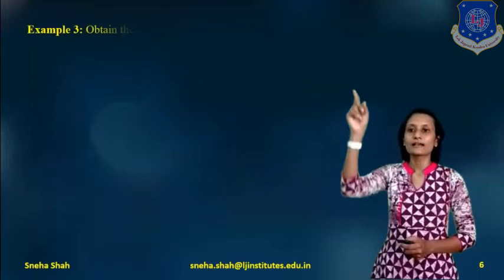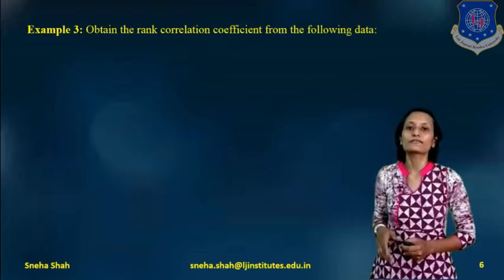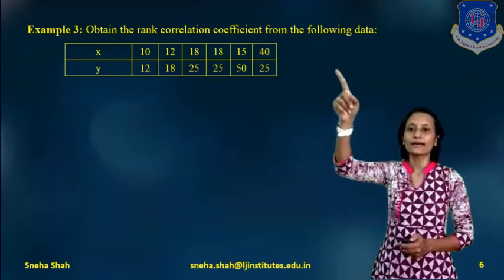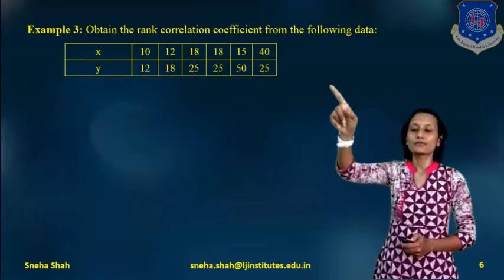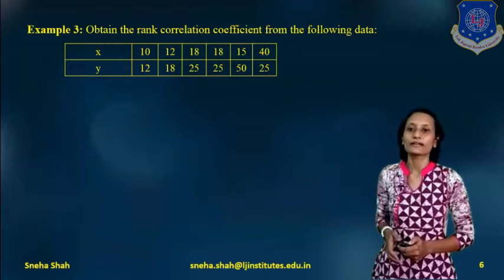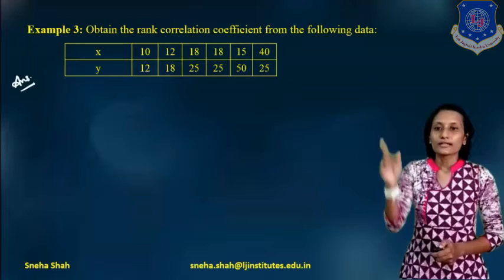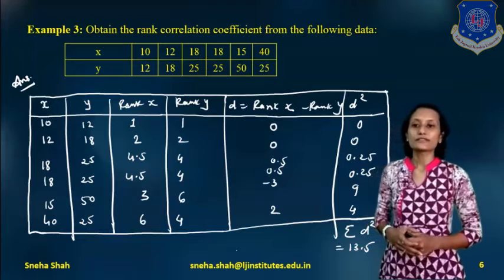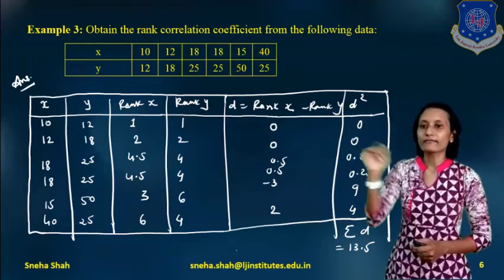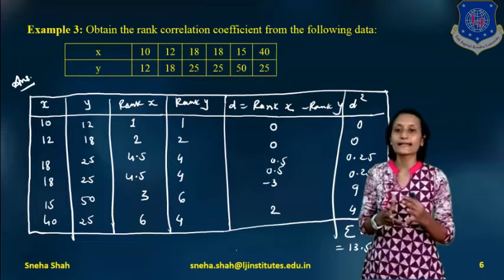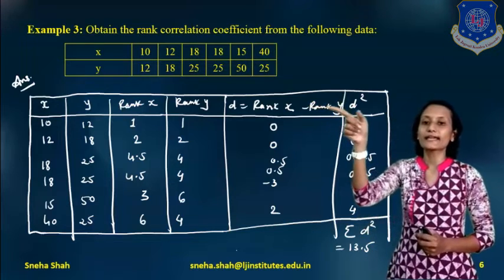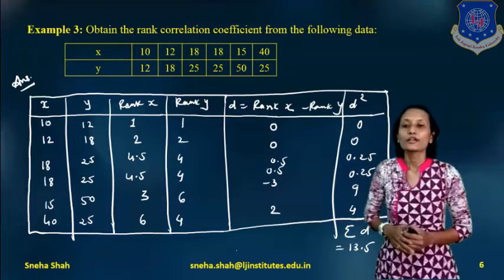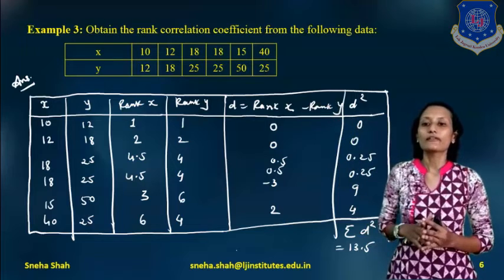The next example: obtain the rank correlation coefficient from the following data. x equals 10, 12, 18, 18, 15, 40 and y equals 12, 18, 25, 25, 25, 50. To derive the rank correlation coefficient, we write x and y, then derive rank x and rank y, take the difference d equals rank x minus rank y, and compute d-squared.